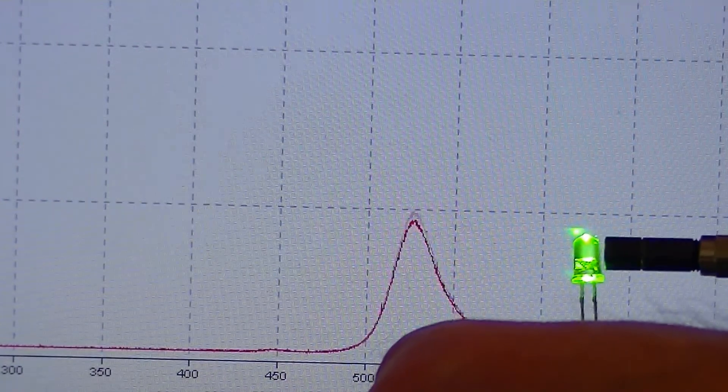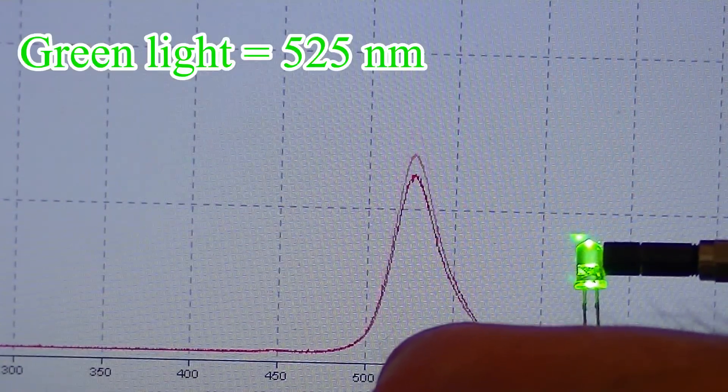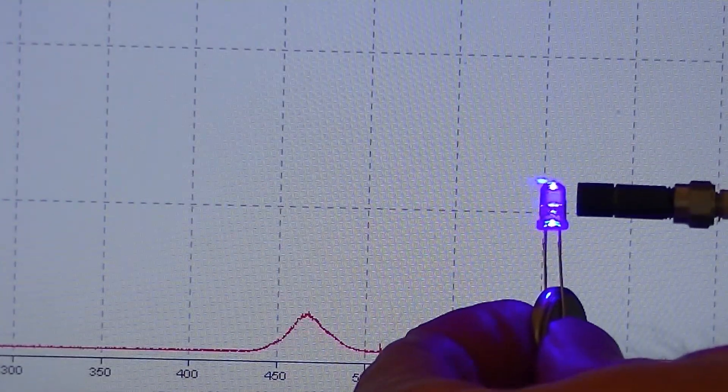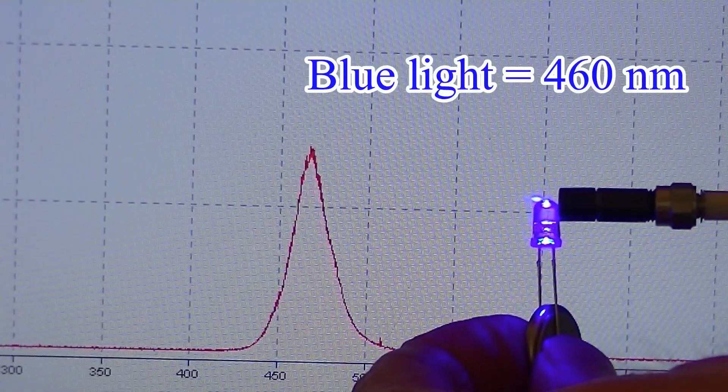Green light from this LED has a wavelength of roughly 525 nanometers. This blue light has a wavelength of about 460 nanometers.